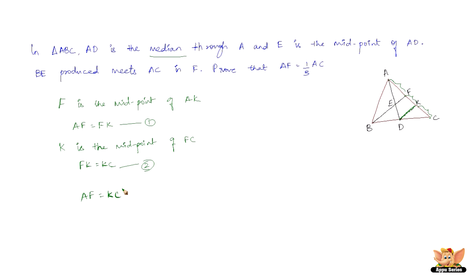AF is equal to FK, FK is equal to KC, therefore AF is equal to KC and also equal to FK. Now AC equals AF plus KC plus FK. Since AF equals KC equals FK, we can write AC equals AF plus AF plus AF, which makes AC equal to 3AF.